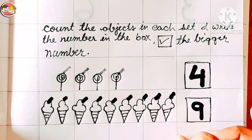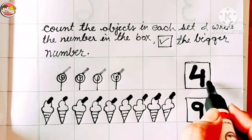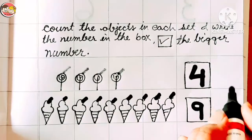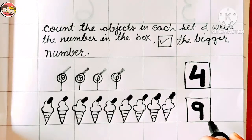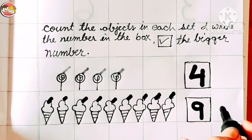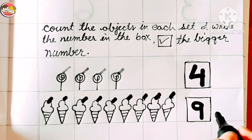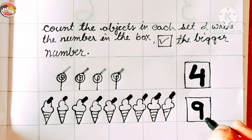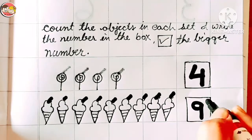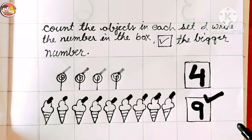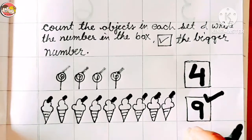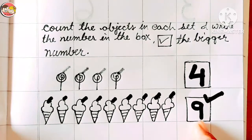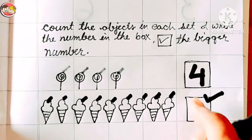Now you tell me — which one is the bigger number, four or nine? Yes, it is number nine — number nine is the bigger number. So let's tick it. Number nine is bigger than number four.